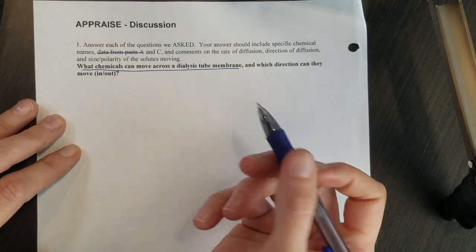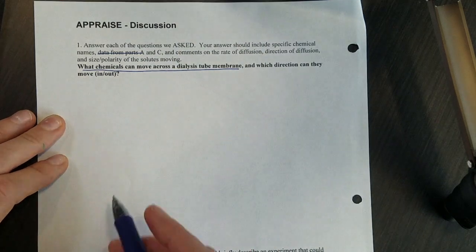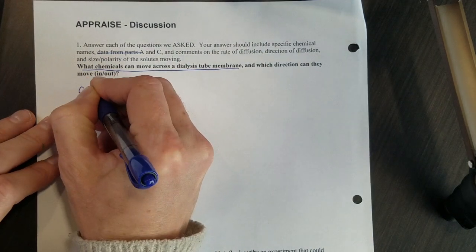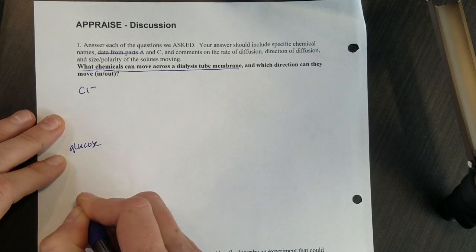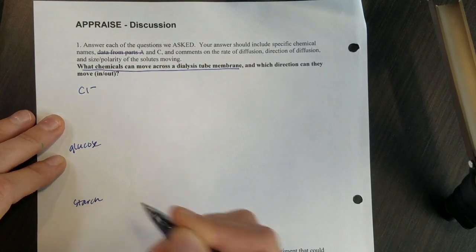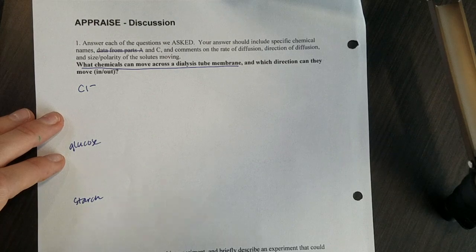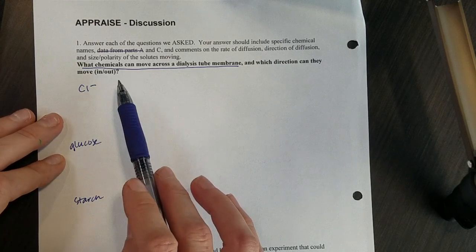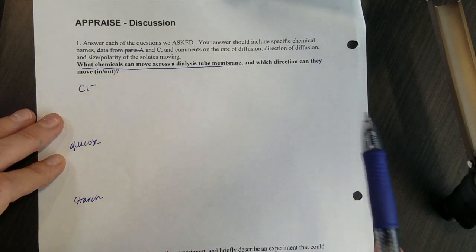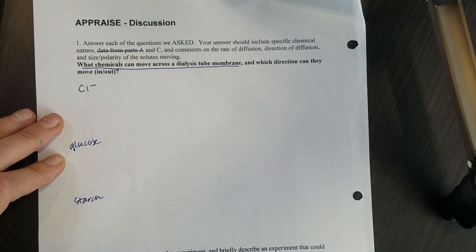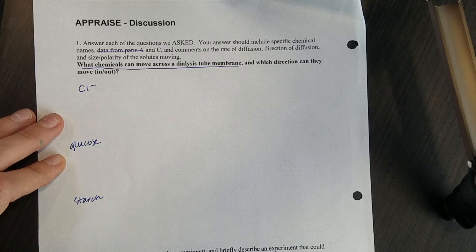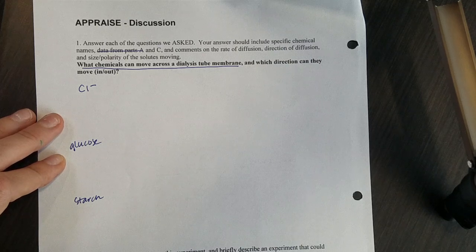We aren't going to have data from part A but you should have three segments to what you write about. Talk about if the chloride moved, if the glucose moved, and if the starch moved. Make a claim like the chloride did move out of the membrane. The evidence is it showed up in surroundings test tubes 3 and 4 where we saw a white cloudy solid.